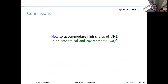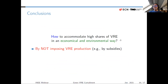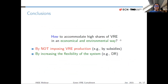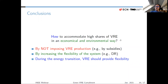The final takeaways: how to accommodate high shares of variable renewables in an economical and environmental way — by not imposing variable renewable production through energy subsidies that cause negative bidding; by increasing system flexibility, for example through demand response; and during this energy transition, by using the flexibility of renewables. They should be part of the solution, not just the problem. The objective for renewables should not be to maximize their output to the system — it should be to maximize their value to the system.